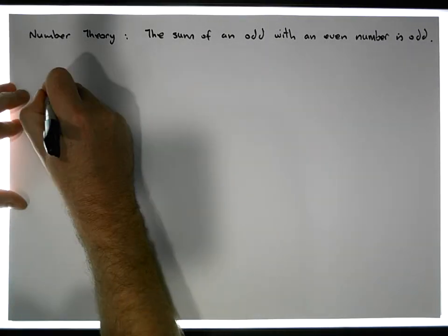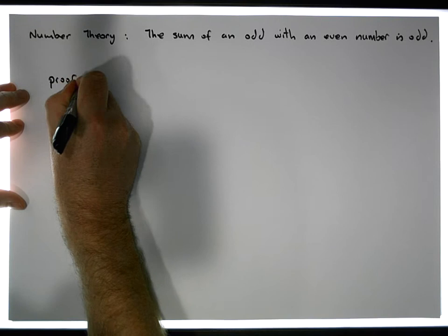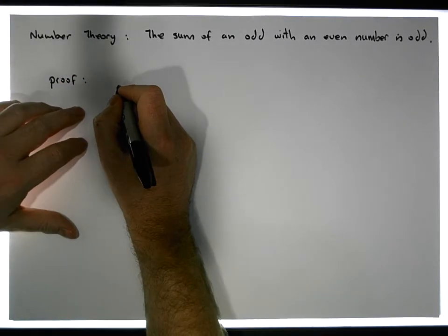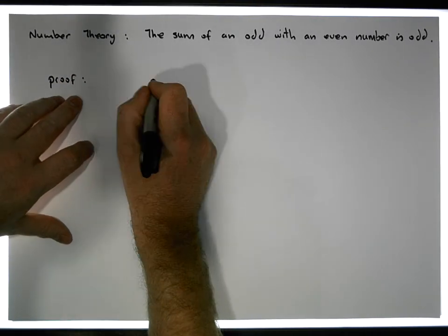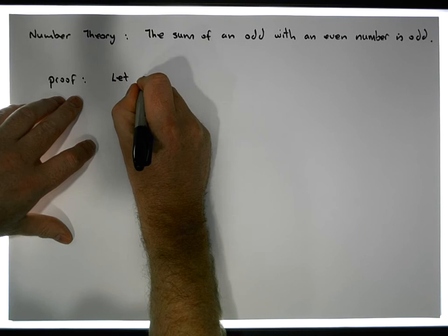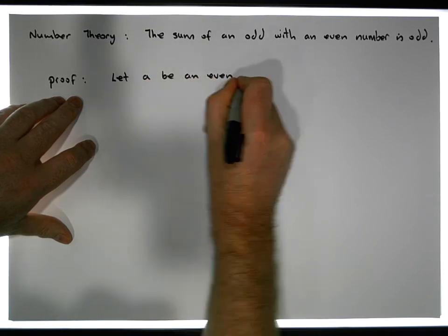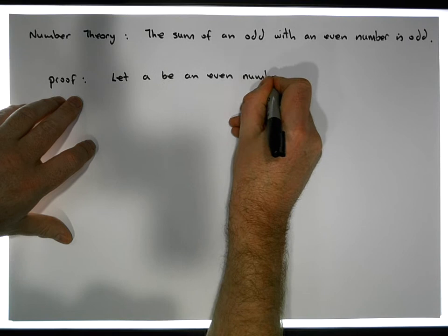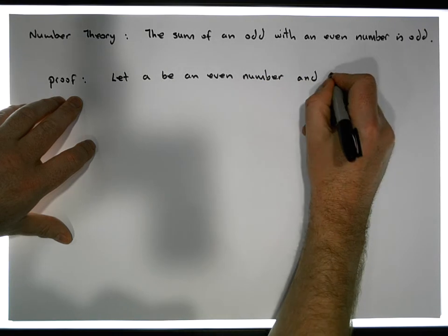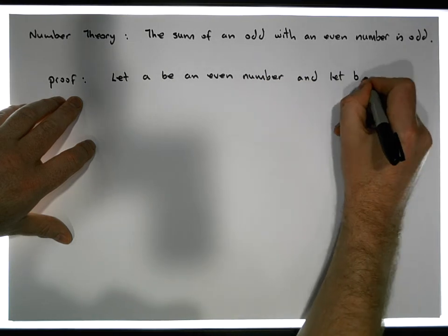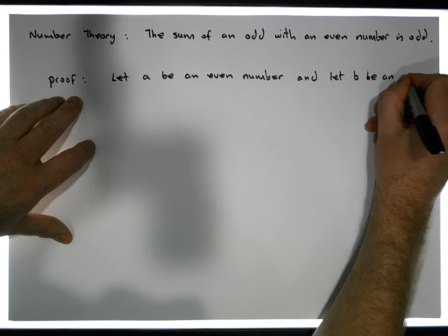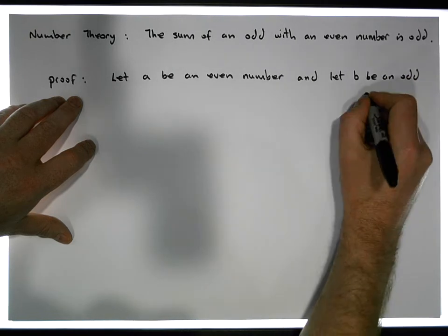So the proof, our proof. I'm just going to say it doesn't matter which one we choose to be odd or which one we choose to be even. We're just going to say let A be an even number, and let B be an odd number.